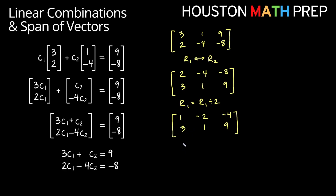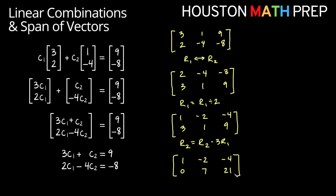I need to make a 0 out of the 3 in the second row. I'll subtract 3 copies of row 1: row 2 becomes row 2 minus 3 times row 1. That gives us 3 minus 3 times 1 equals 0, then 1 minus 3 times negative 2 gives us 7, and 9 minus 3 times negative 4 gives us 21. So the second row now reads 0, 7, 21. This row says 7 times c2 equals 21, so c2 equals 3.